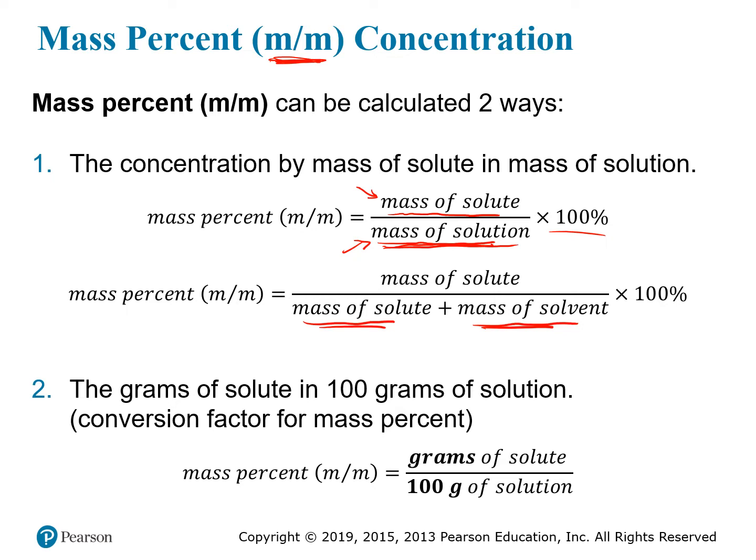The other way to think about mass percentage is as the number of grams of solute in 100 grams of solution. This is sometimes more difficult to calculate directly, but it's very useful for deriving the conversion factor. For example, a 10% solution by mass (m/m) means you have 10 grams in 100 grams of solution — helpful for finding conversion factors, though not always the easiest way to calculate.